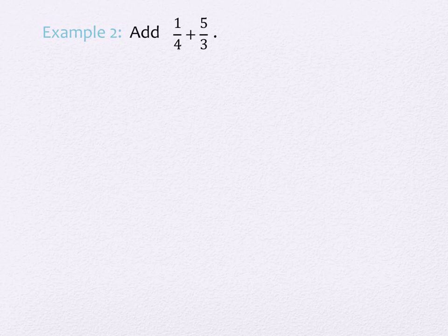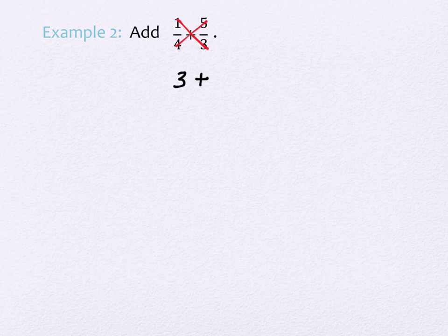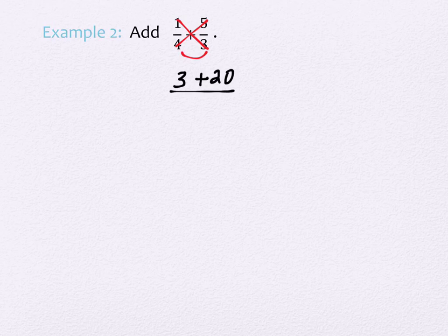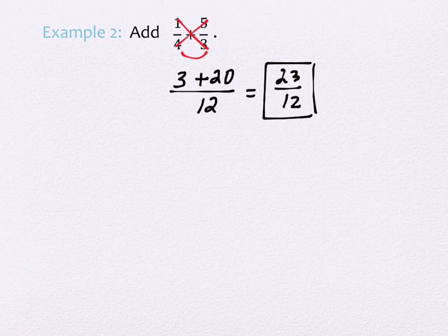Here's an unlike denominators example. I'm going to cross multiply. So I have 1 times 3 is 3, plus 4 times 5 is 20, over 4 times 3 which is 12. What is 3 plus 20? That's 23 over 12. Unless I'm told to, I don't need to turn that into a mixed number. Reduce it if you can — 23 is prime, so it doesn't reduce.